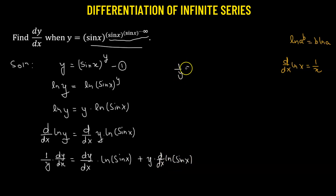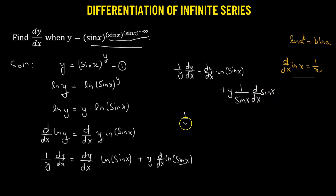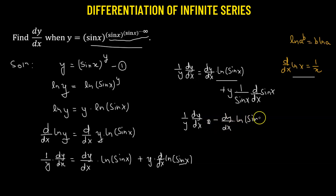This gives us 1 over y times dy/dx equals dy/dx times log(sin x) plus y times the derivative of log(sin x). To find the derivative of log(sin x), we apply the formula giving 1 over sin(x), then use the chain rule and multiply by the derivative of sin(x). Transposing the log(sin x) term to the left-hand side gives us negative dy/dx times log(sin x).